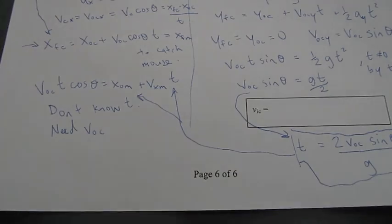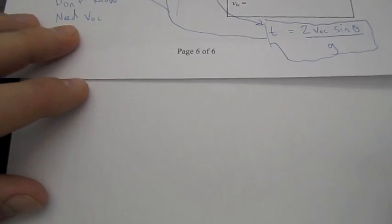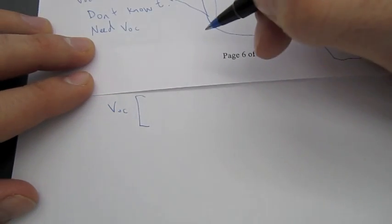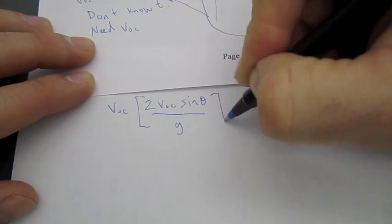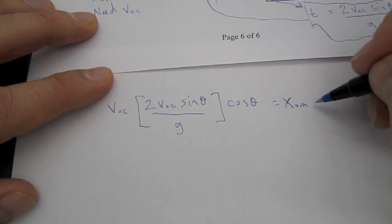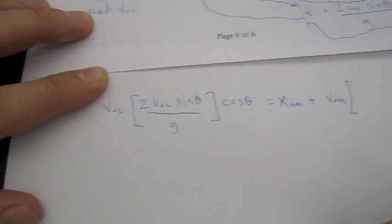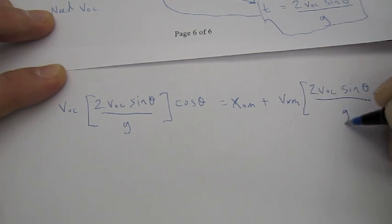So, I will have to go on to the next page to do this. It's kind of a long one, but... Okay, so... What we end up with, if we do that, is we get V 0 C times time, which is 2 V 0 C times sine theta divided by G times cosine of theta, is equal to the initial position of the mouse, plus V initial of the mouse, or the speed of the mouse, times time. Where time is 2 V 0 C times sine theta divided by G.